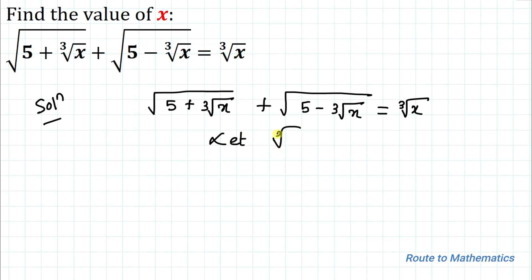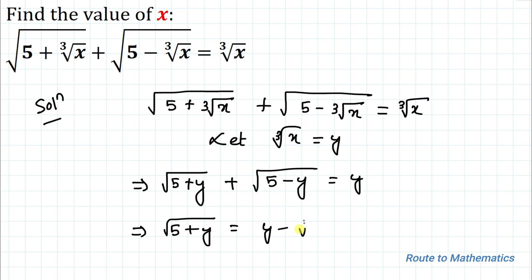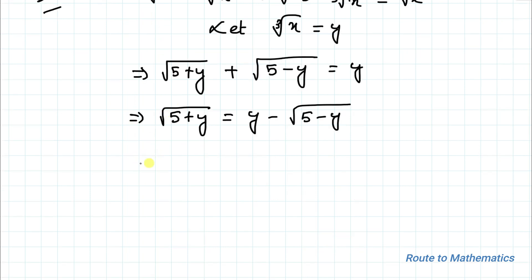In the next step, let's take ∛x = y. So the above equation becomes √(5 + y) + √(5 - y) = y. This implies we can write √(5 + y) = y - √(5 - y).